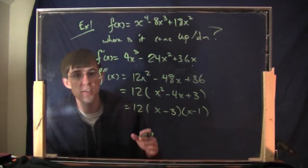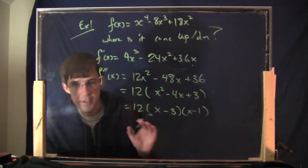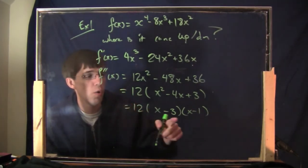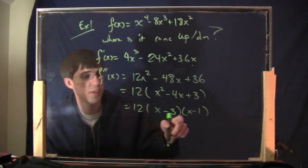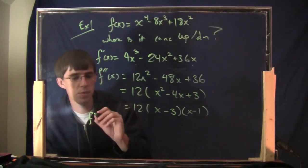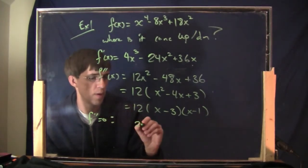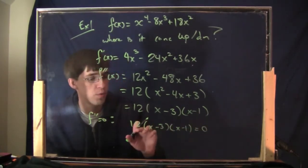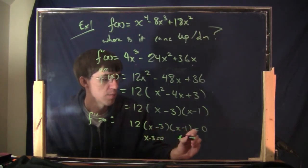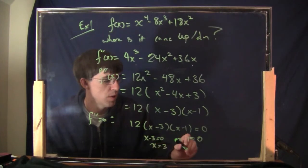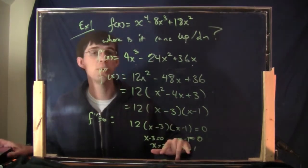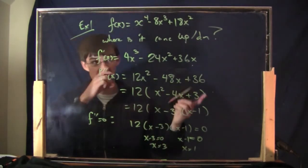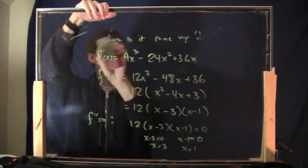These will be possible inflection points — points where the concavity switches from up to down or down to up. This function always exists, so the second derivative always exists. The second derivative equals zero when 12(x minus 3)(x minus 1) equals zero. Dividing by 12, we get x equals 3 or x equals 1. These two points are the potential inflection points, places where concavity will switch.